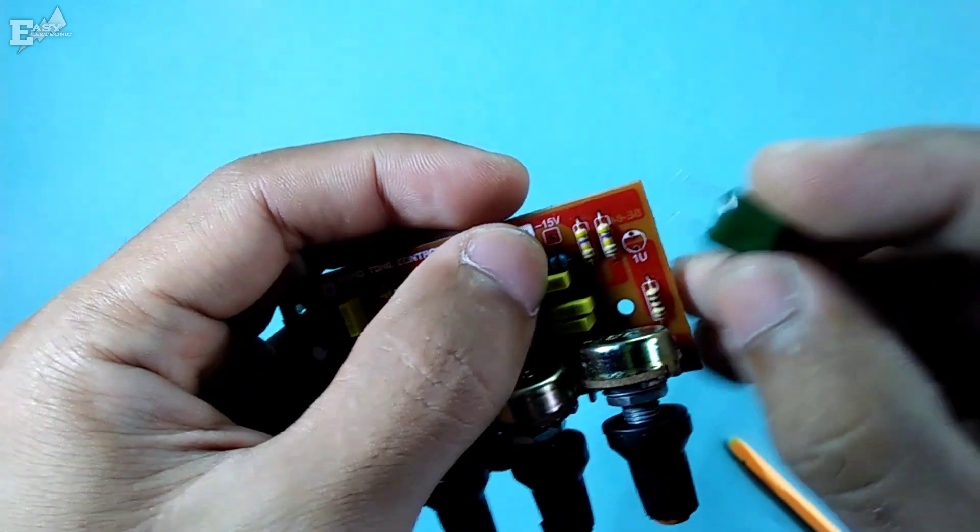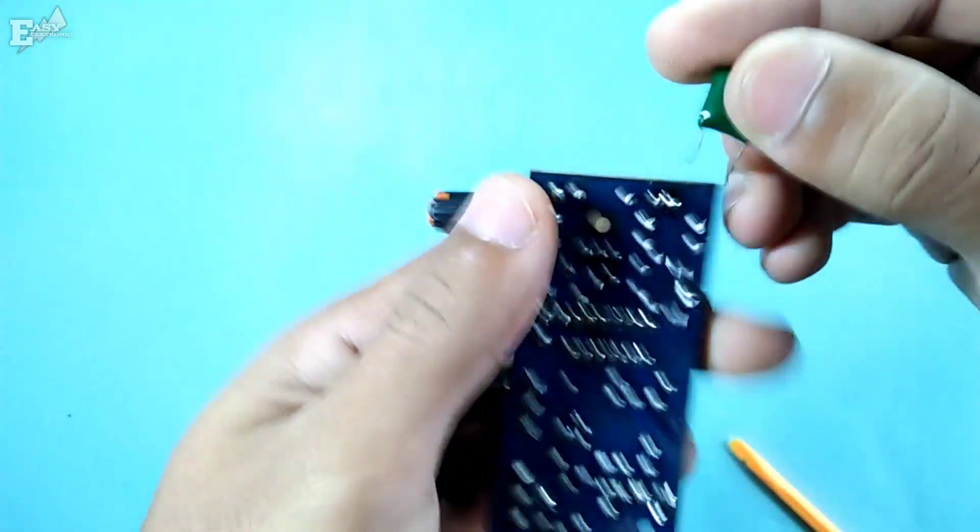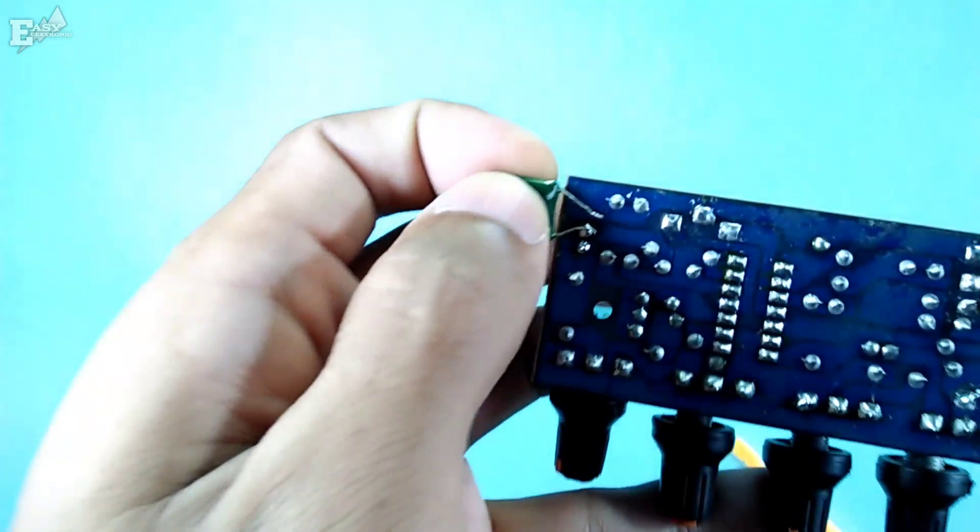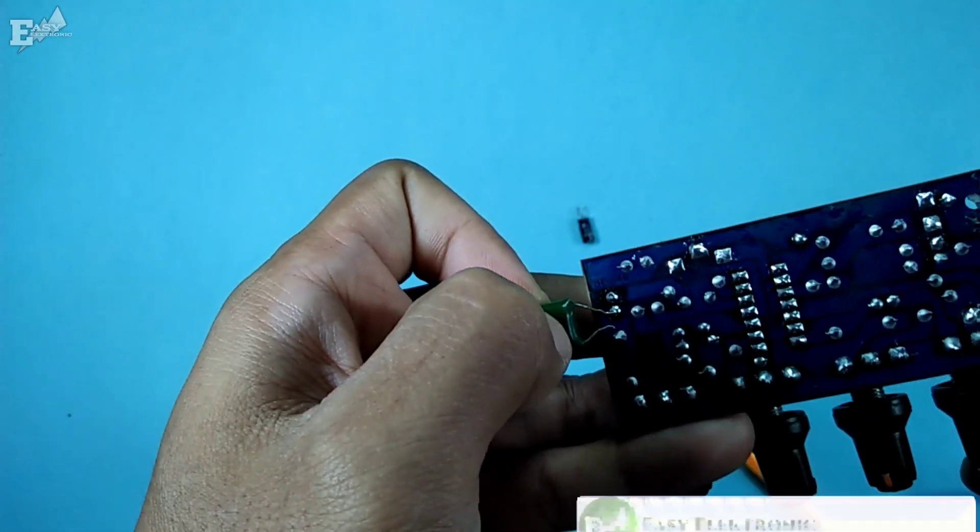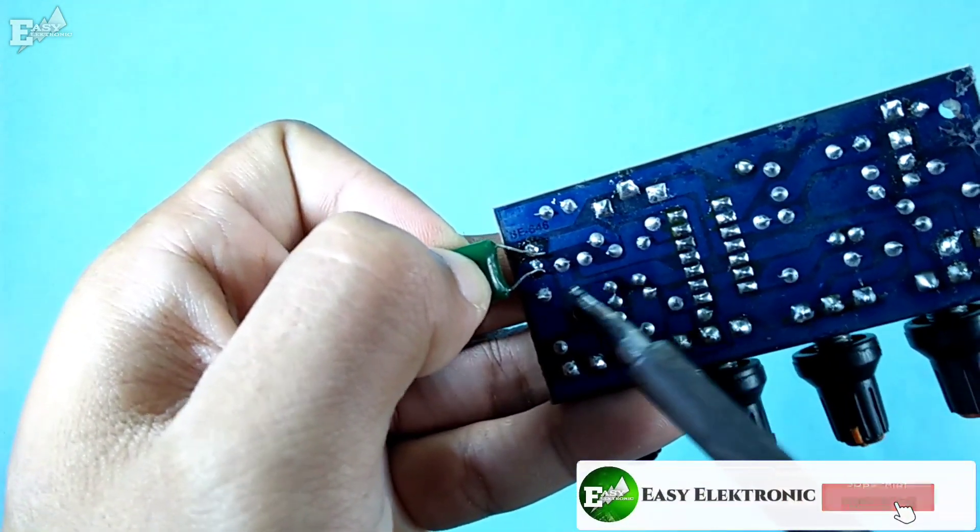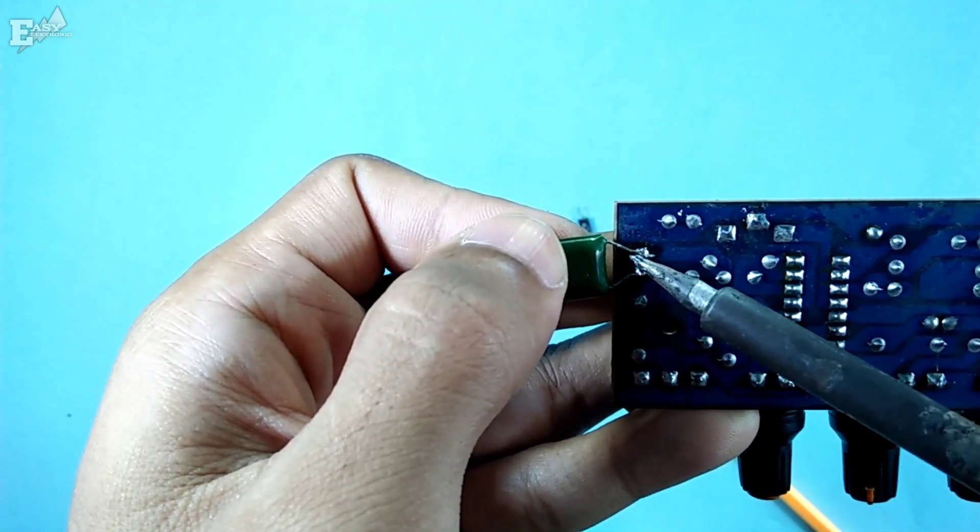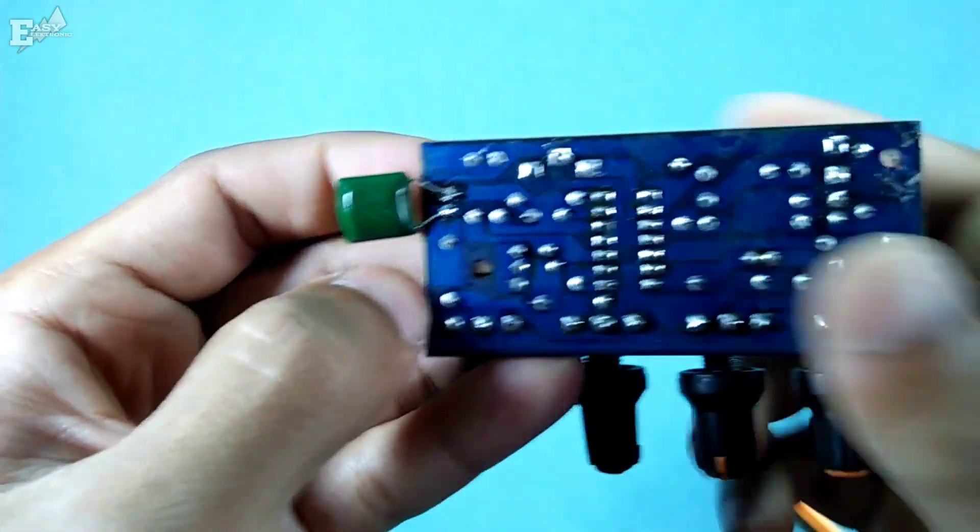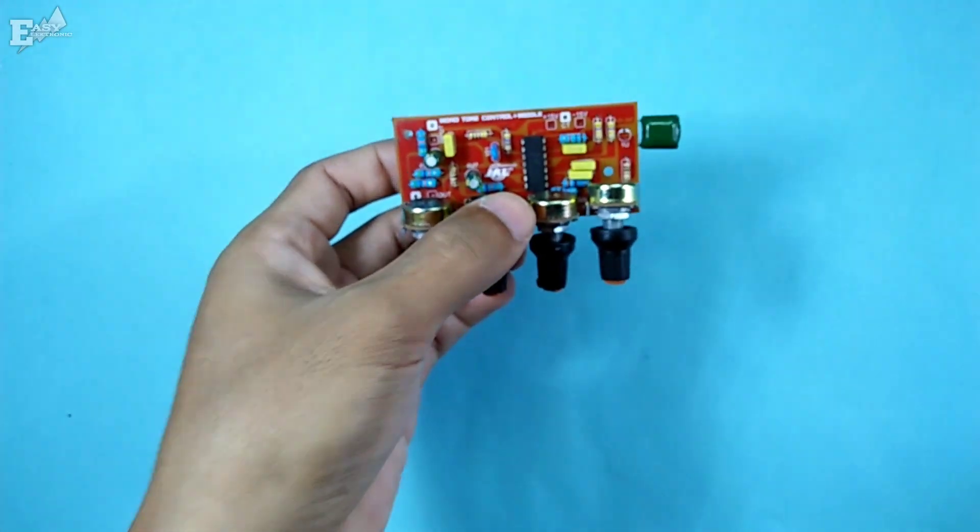Now let's install this mylar capacitor. It can be installed in reverse with no problem because it's non-polar. Let me install it on the back here for easier access since the holes are very close together. It doesn't matter as long as the sound result is good. Let me solder it first.